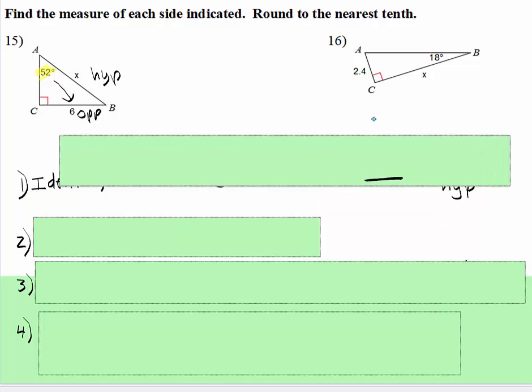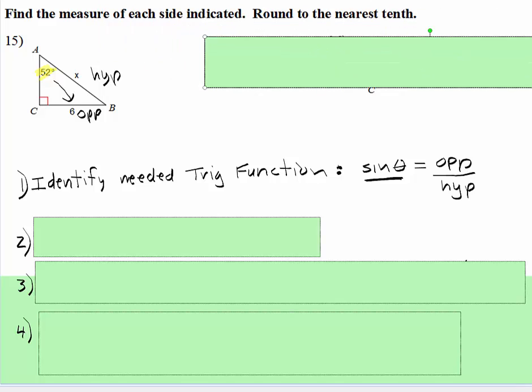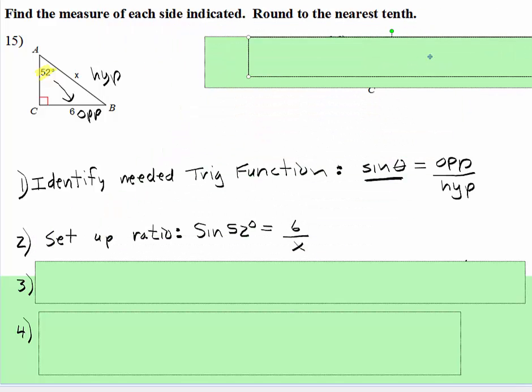So we can get rid of that. The next step, after we've identified, is set up the ratio. So sine of 52 degrees is 6 over - opposite over hypotenuse - so 6 over x.